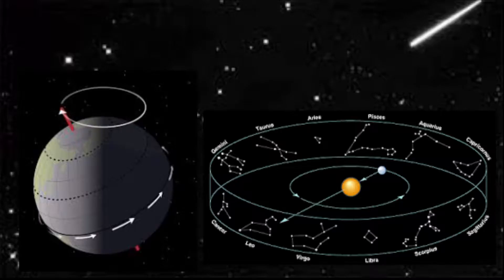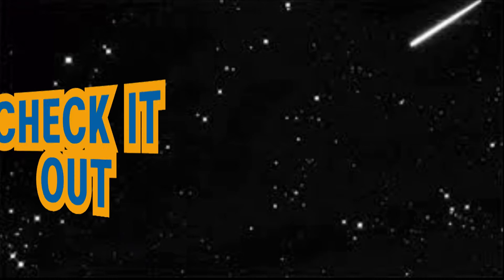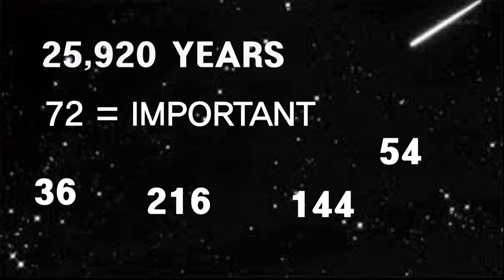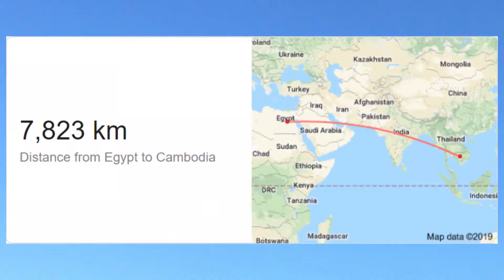Precession, the next connection, and this is a huge connection. If you see my video on precession, you will know how long it takes the Sun to move through the 12 zodiacs, and there are specific numbers associated with precession. With 72 years representing one degree of movement. Some other numbers are 36, 54, 144, 216, and so on. The numbers are very specific. So let's look at the numbers of precession, how it connects the two locations, and how they are ingrained into the sites.